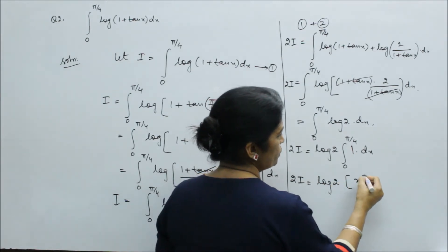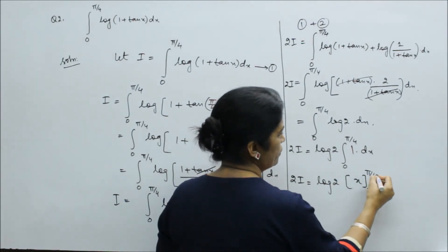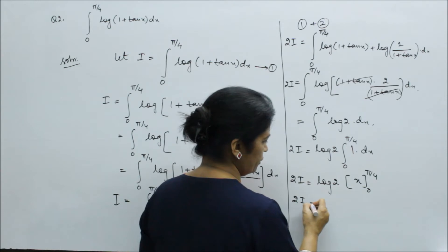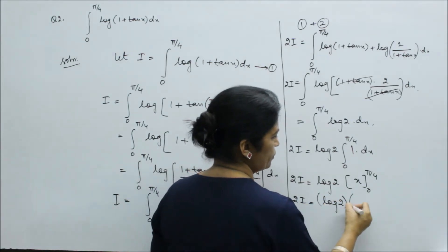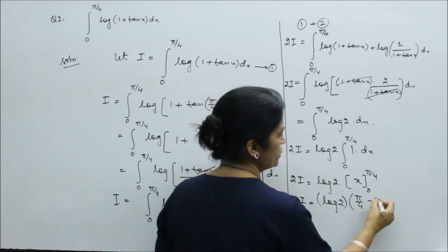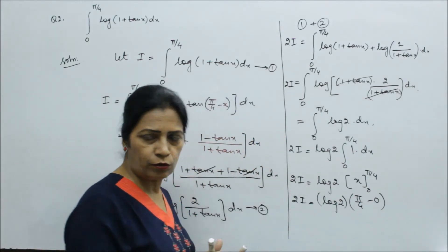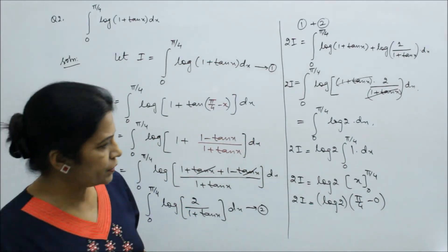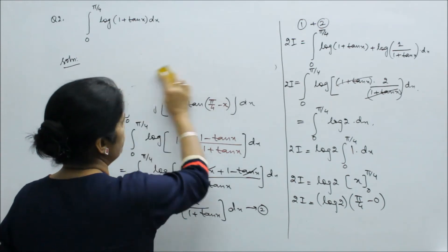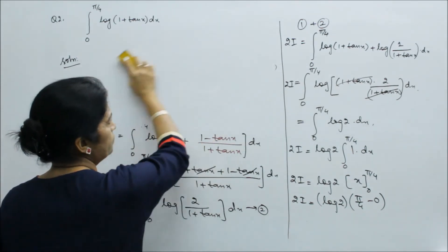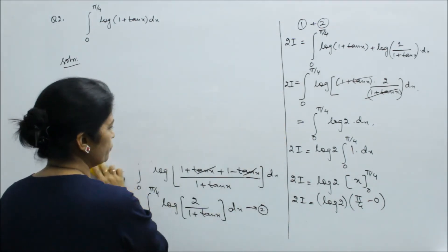So x with limits. You can see the result will be π by 4 minus 0, upper limit minus lower limit. So this is twice of the integral.